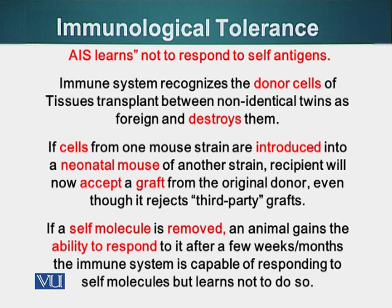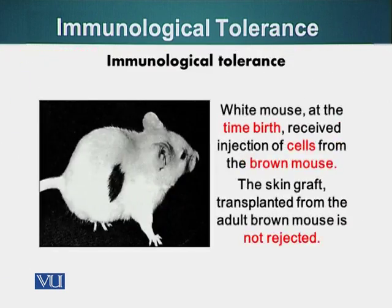Another point: if we do a conversion experiment — if we remove a protein which is normally present in an individual or animal and then reintroduce that protein — our immune system will react to it. So it is not that our immune system cannot react to our own tissue; it is that our immune system has made a choice that it is not going to react to anything that is self. Let's look at the cellular basis of this.